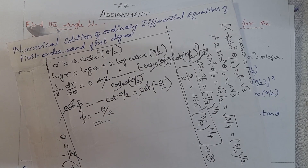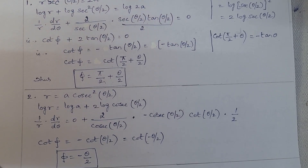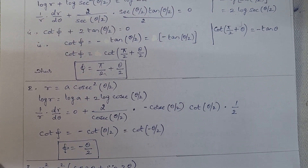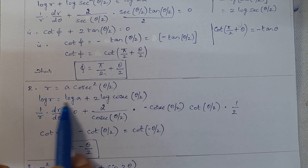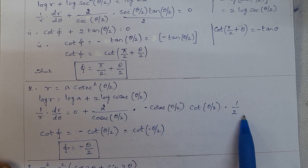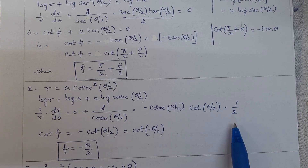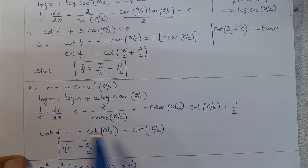For the solution, write the second problem question as it is, apply log, then do differentiation with respect to θ. Then cot and cot cancel, giving φ = -θ/2.